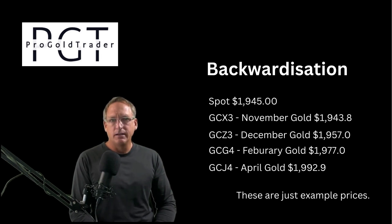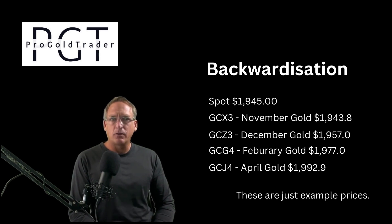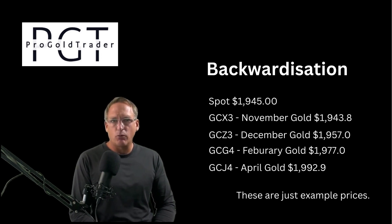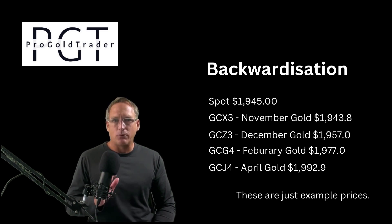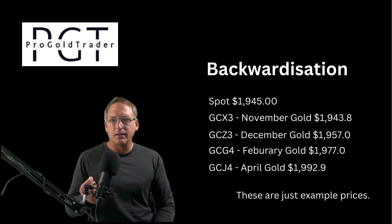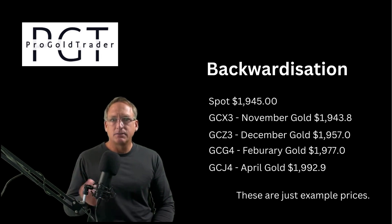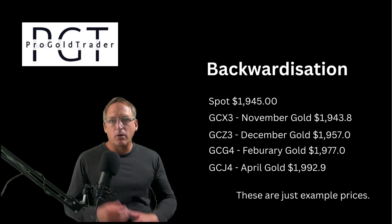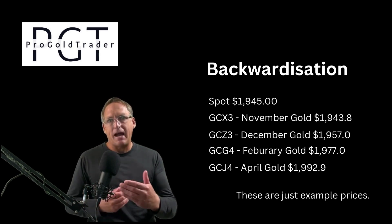Let me give you a case in point. Spot price is $19.45. Going out one month to the November contract: $19.43.8. That futures price — the November delivery — is lower than the spot price. That's where the market goes into backwardization.